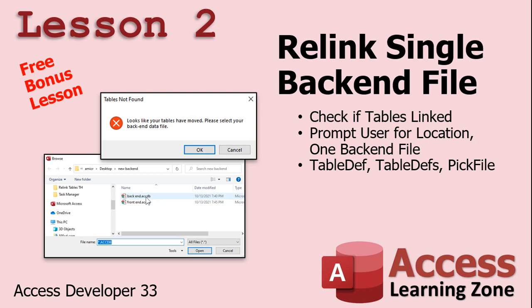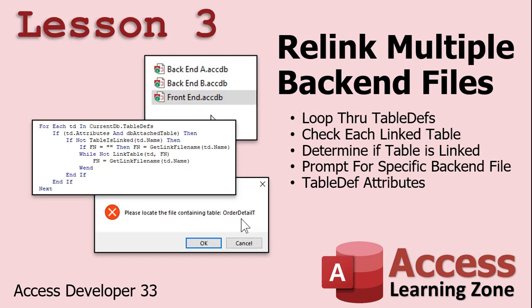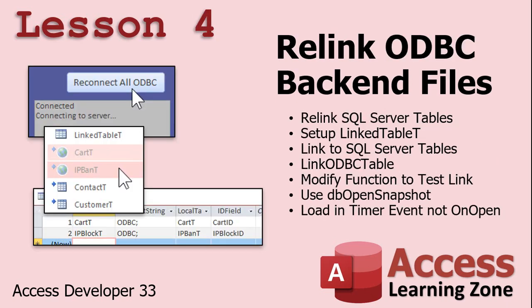In lesson three, we'll cover multiple files. We're going to loop through all of the tables in the database, find out if they're attached tables or not, check to make sure they're attached, and if not, prompt the user where they put the back-end file, and then continue on. So you can have multiple back-end files and reattach them using the methods in lesson three. In lesson four, we will learn how to automatically relink ODBC back-end files, including those to SQL Server.